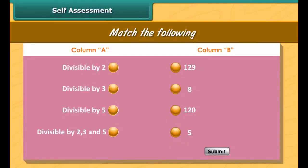Students, let us check what you have learned about divisibility rules. Match the options in column A with the correct options in column B. Consider the numbers 132, 1562, 2717, and 83,919.